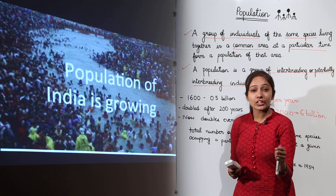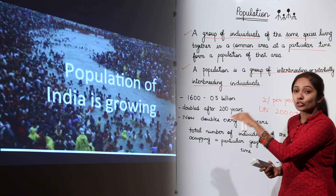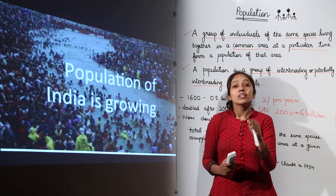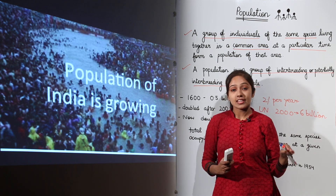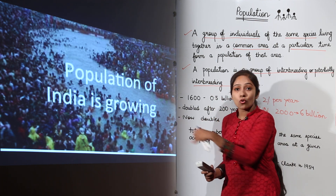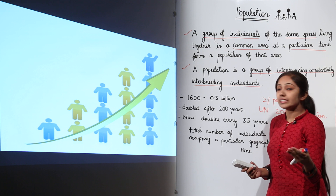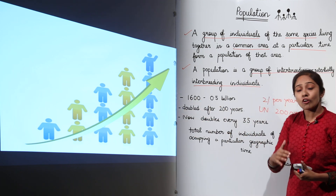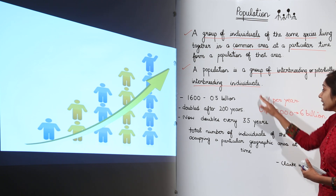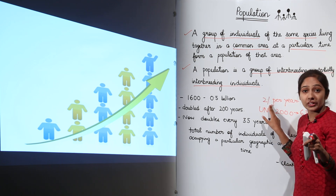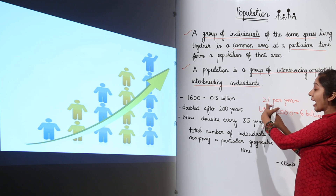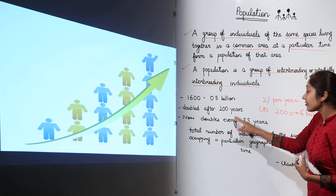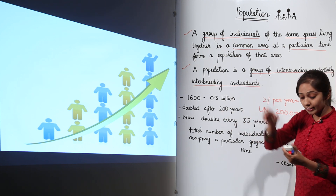Moving on, the population of India is also growing. Since India is a developing country, the rate of increase of population is quite high compared to developed countries. The population is continuously increasing at 2 percent per year, and it now doubles after every 35 years instead of every 200 years as before.